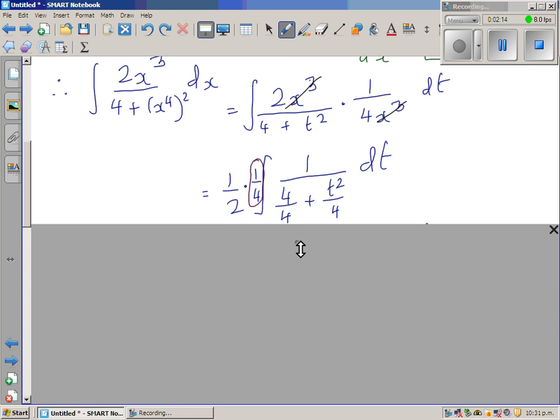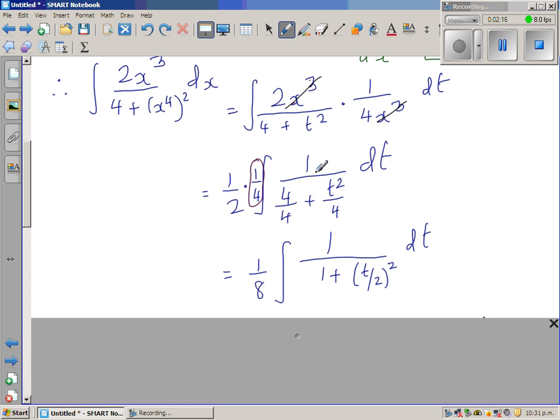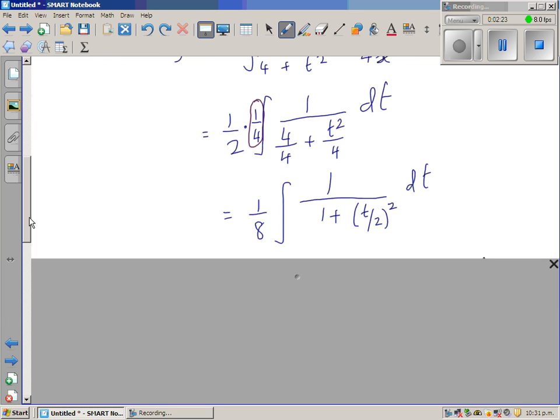This becomes 1/8 of 1 over 1 plus t over 2 squared dt, completely in terms of dt.